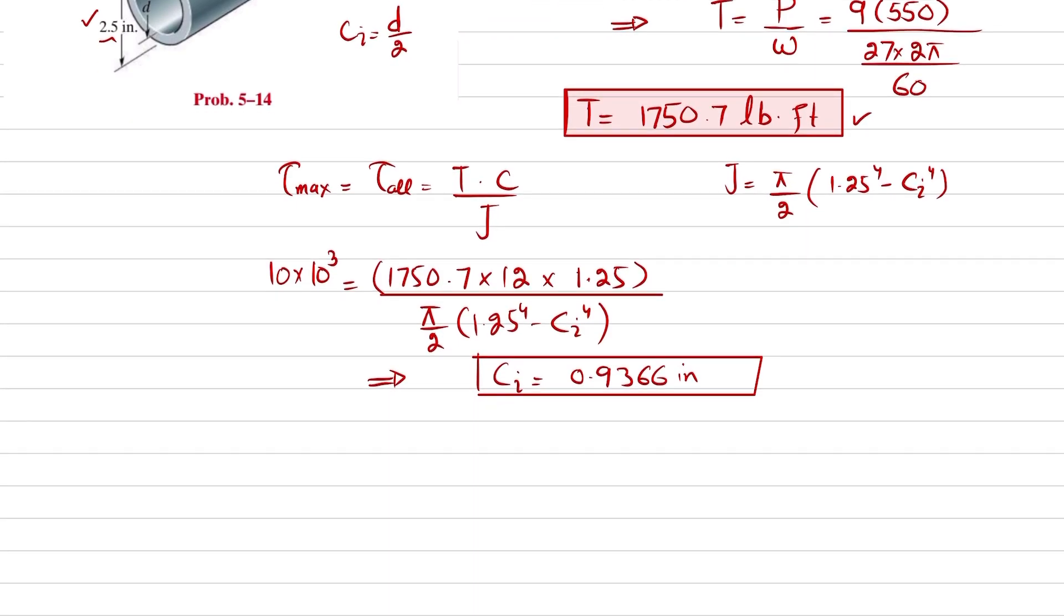Clear, so this is internal radius. And we know that c_i is equal to d divided by 2, internal diameter divided by 2. So from here, d will be equal to 2 times c_i, so 2 multiply by 0.9366 inches. So you will get diameter is equal to 1.873 inches.